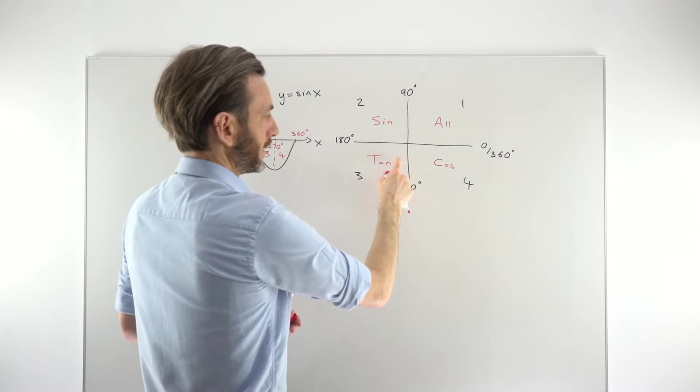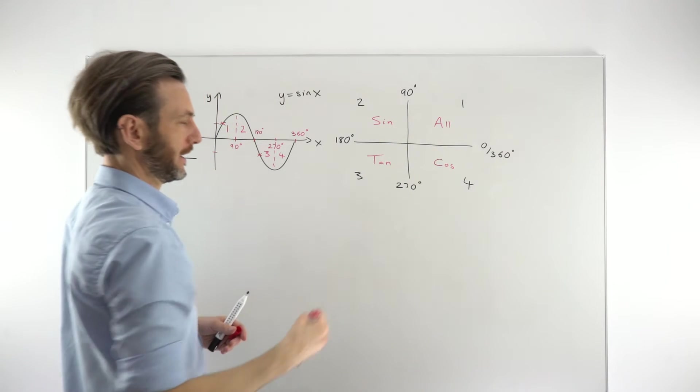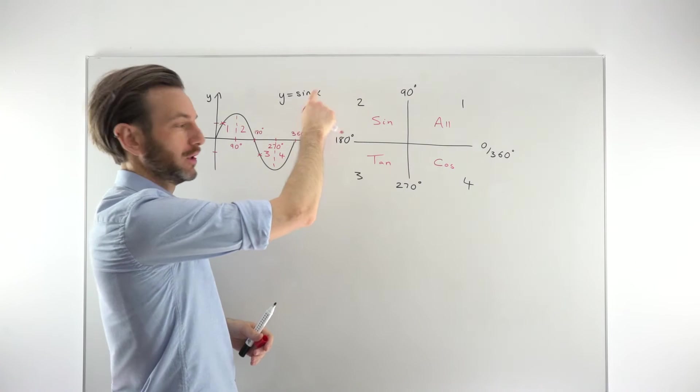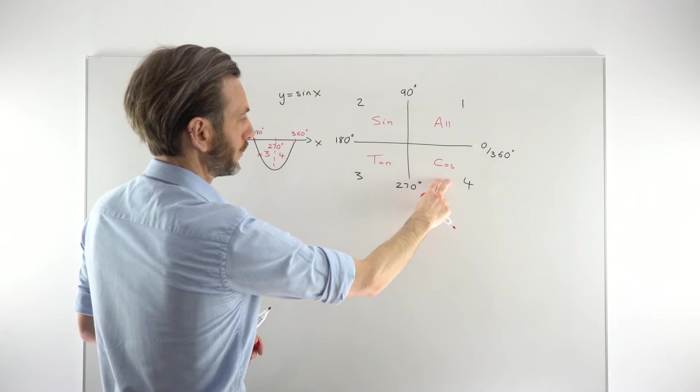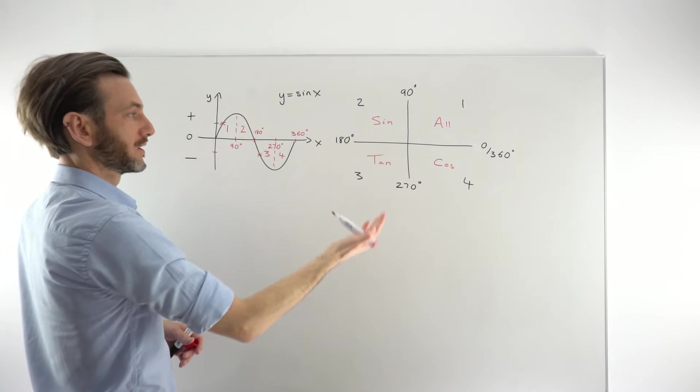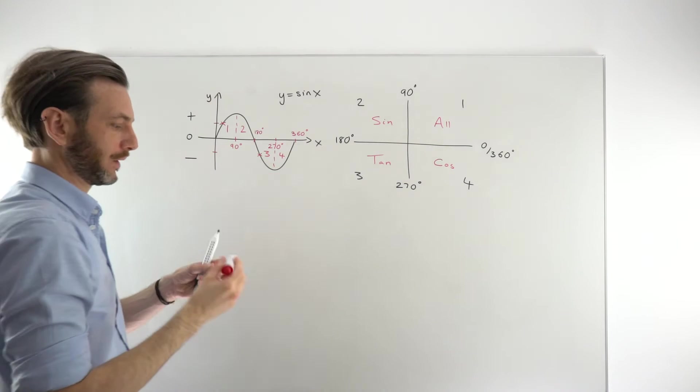When you go into a quadrant which is not part of the function you're interested in, then it becomes negative. So if we're dealing with a sine function, but we're looking in the third or the fourth quadrant where tan and cos are positive, then that must mean that sine is negative. And we can see on the sine graph that sine is negative in 3 and 4.